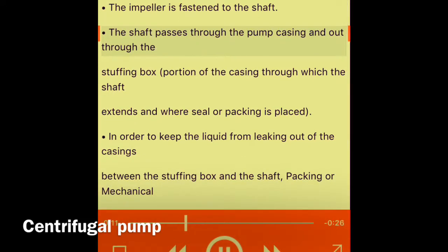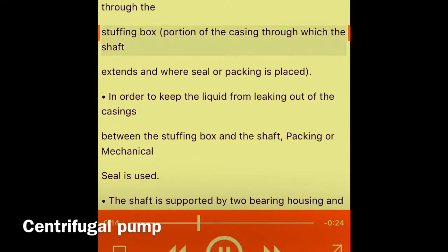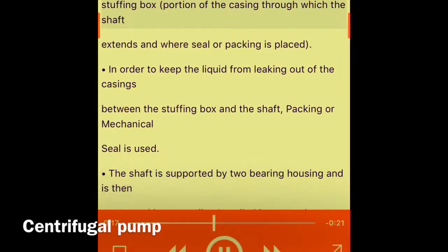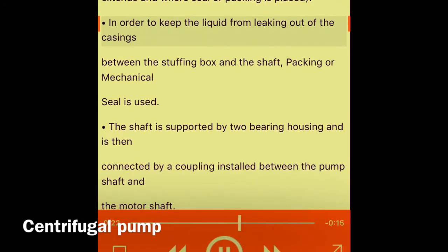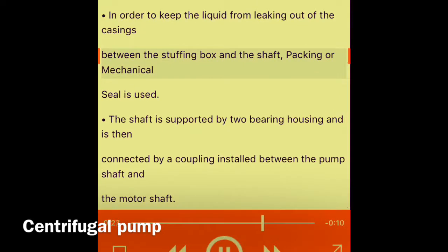The portion of the casing through which the shaft extends and where seal or packing is placed, in order to keep the liquid from leaking out of the casings between the stuffing box and the shaft, packing or mechanical seal is used. The shaft is supported by two bearing housings and is then connected by a coupling installed between the pump shaft and the motor shaft.